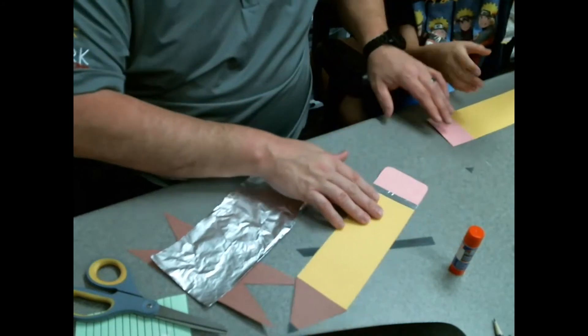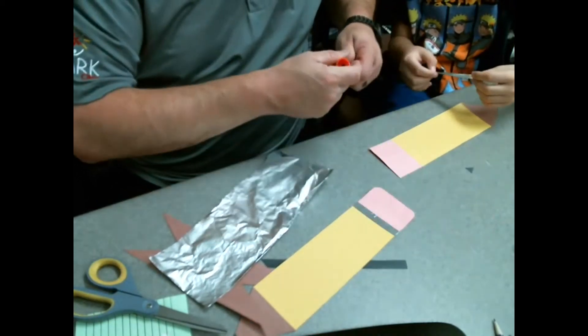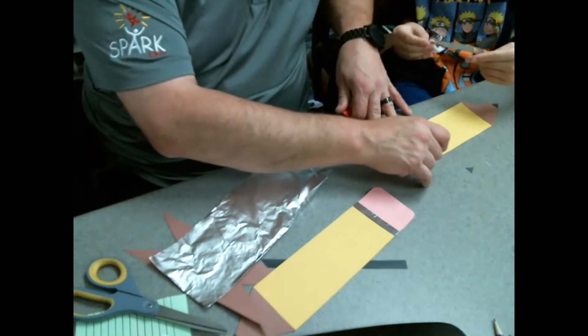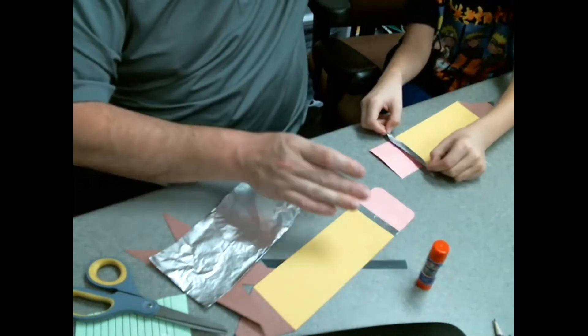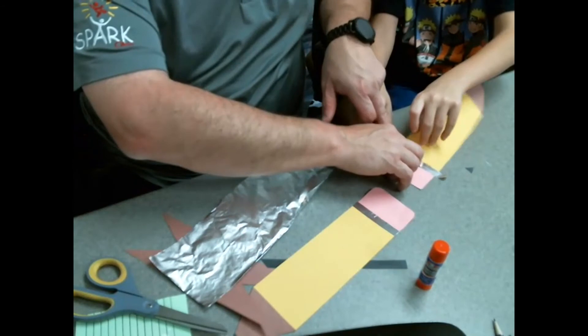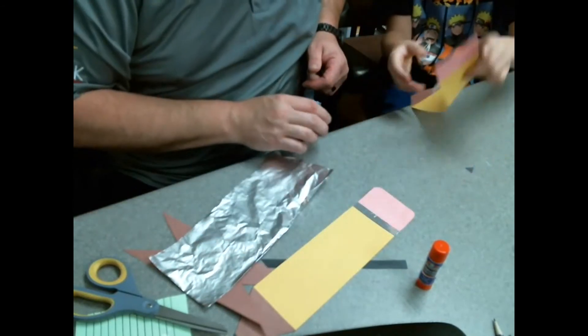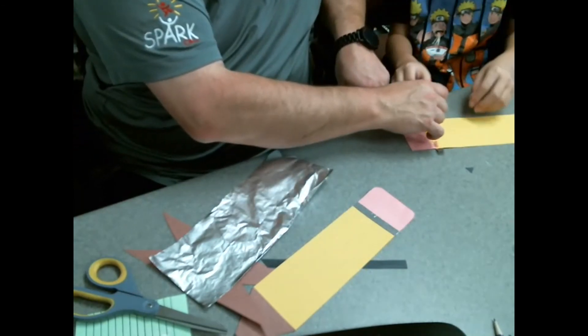Now this strip here is gonna lay over top of our pink and our yellow. So we're gonna take a nice glue strip like so, sit it down, push it down real tight. Make sure it's on there real nice and tight, and we're gonna flip it over. And then we're gonna put some glue here and some glue here.